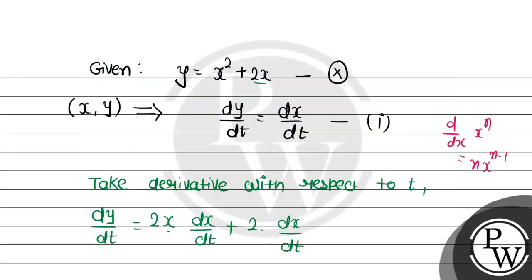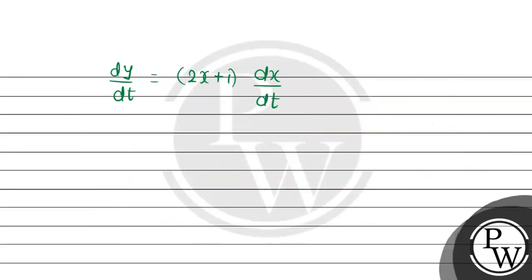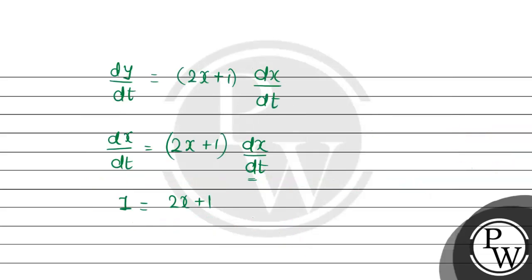Since dy/dt equals dx/dt from the given condition, we substitute. So we get dx/dt equals (2x + 1) dx/dt. Dividing both sides by dx/dt, the answer is 1 equals 2x + 1. Wait, sorry — this is not 1, this is 2. So here also 2. So 2x + 2 equals 1.